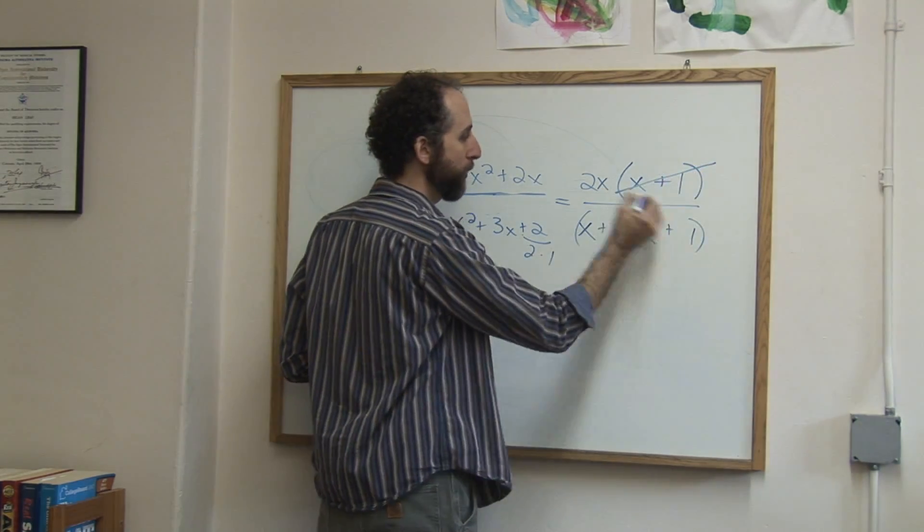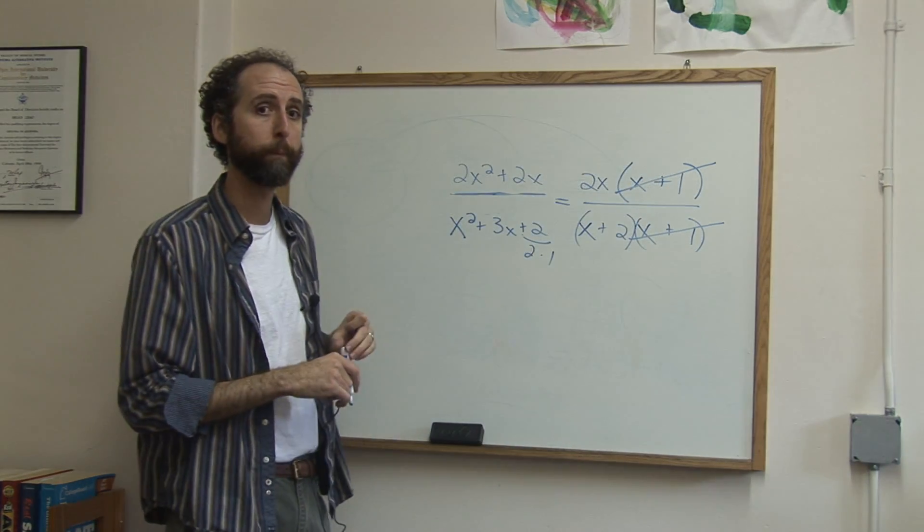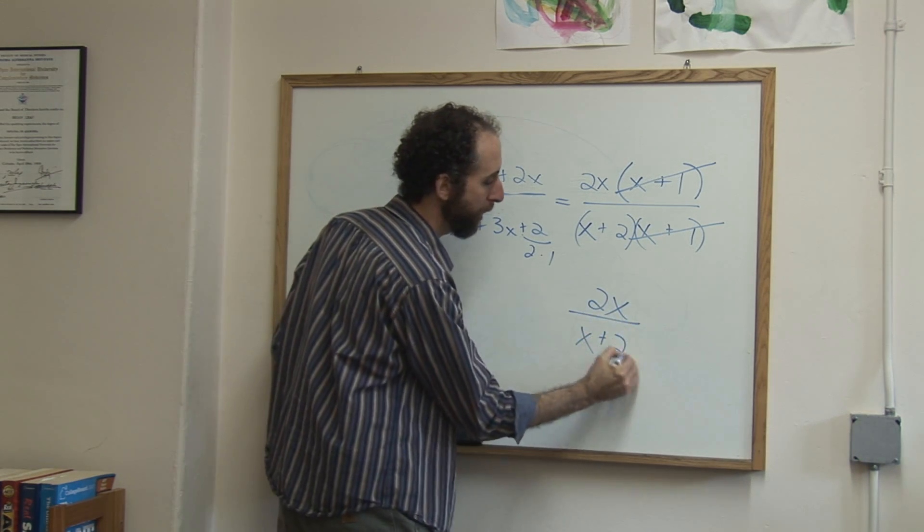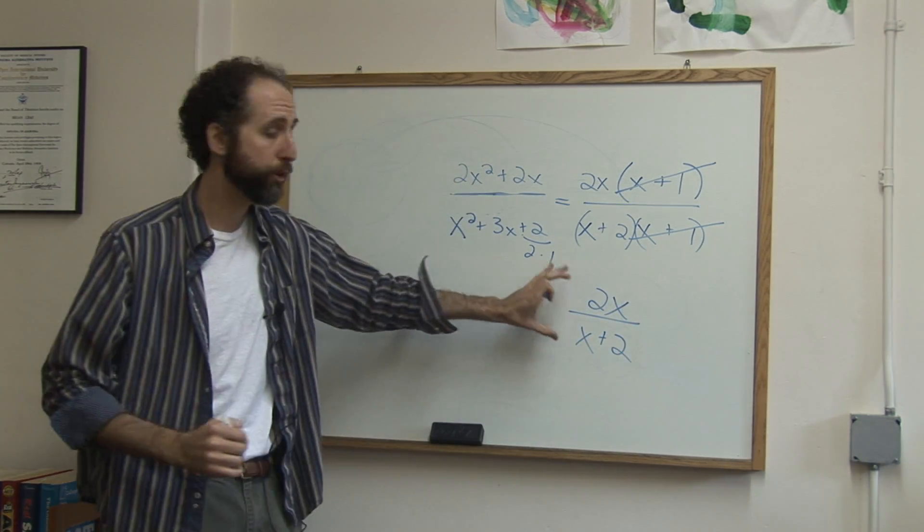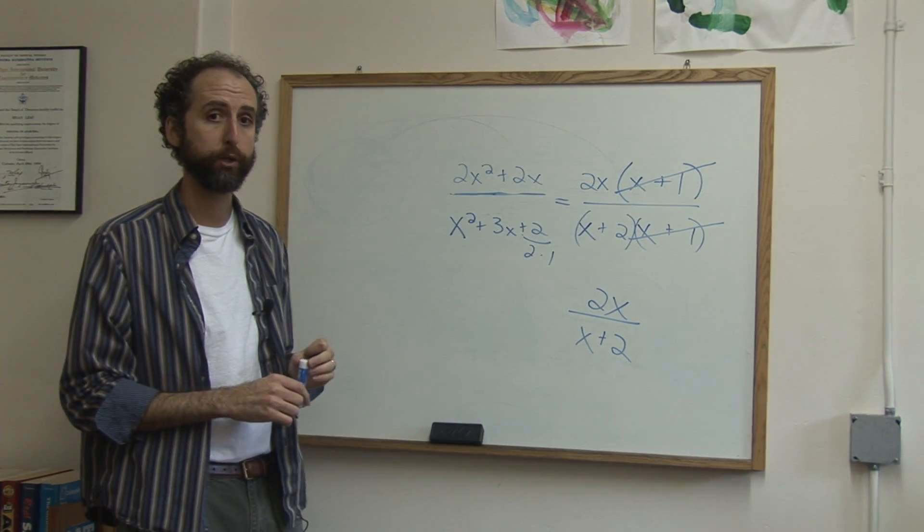So (x+1), (x+1) cancel because anything over itself is 1, it disappears. So I'm left with 2x on top, (x+2) on bottom, and that is the reduced or simplified version of this rational expression.